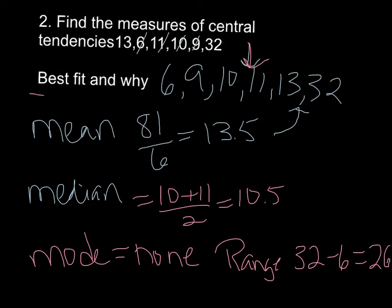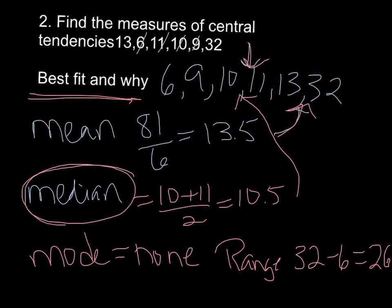Now, best fit. My mean, if you look at my mean, it is way over here. It's between the last two numbers. So that doesn't describe my numbers very well. Median is here in the middle. So this one would be my best fit. It describes my numbers. Again, think central tendencies. So on this one, we would have to have a median.